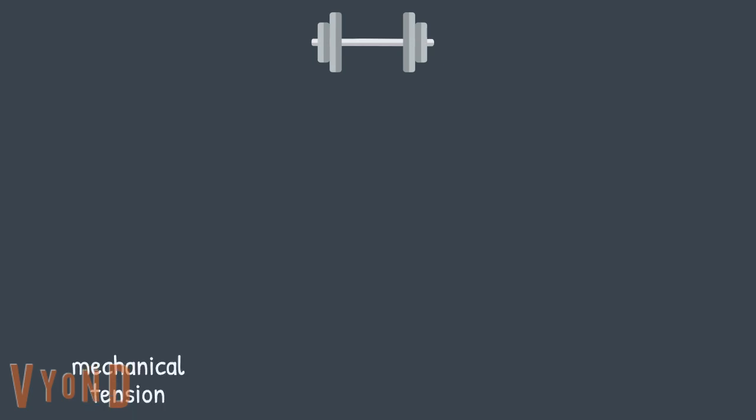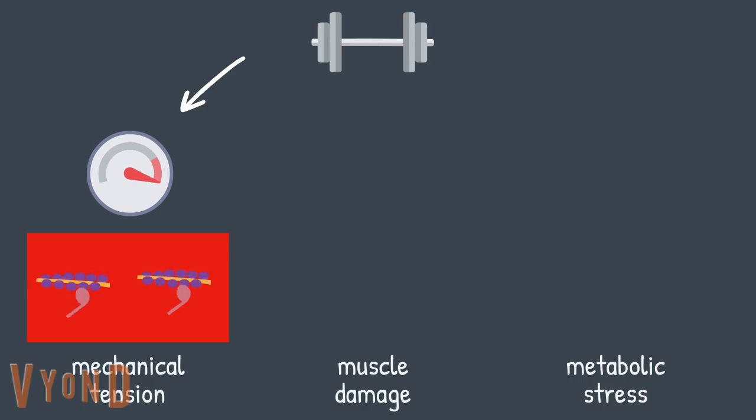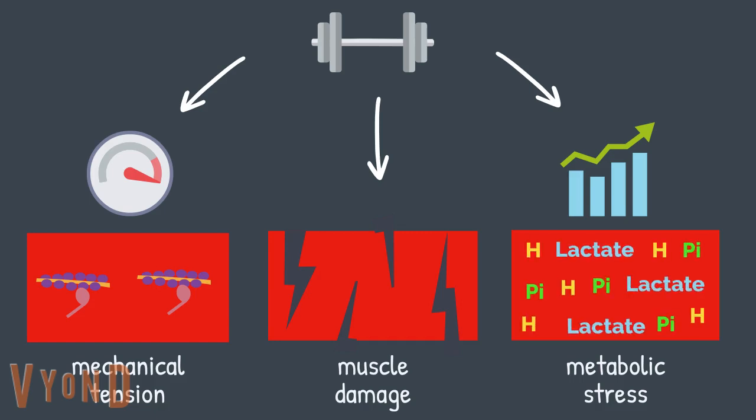Mechanical tension, metabolic stress, and muscle damage. Mechanical tension is defined as the overloading force to the muscle fibers that occur when lifting a heavy load. Muscle damage refers to the micro tears in the muscle fiber that occur as a result of weight lifting. Metabolic stress is a physiological response that occurs during exercise that leads to the accumulation of metabolites in our muscle cells, such as lactate, organic phosphate, and hydrogen ions.